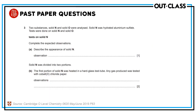Some questions related to identification of ions. Two substances, solid N and solid O, were analyzed. Solid N was hydrated aluminum sulfate. Since N is hydrated aluminum sulfate, it will have aluminum ion and sulfate ions.